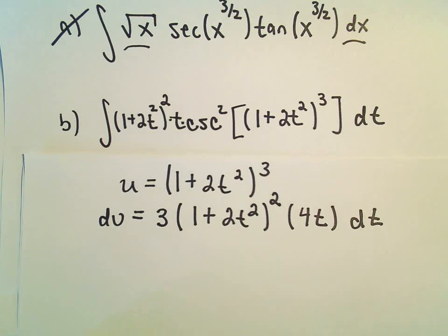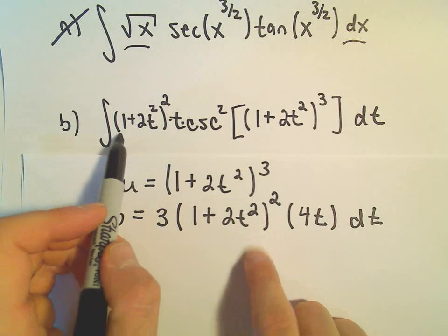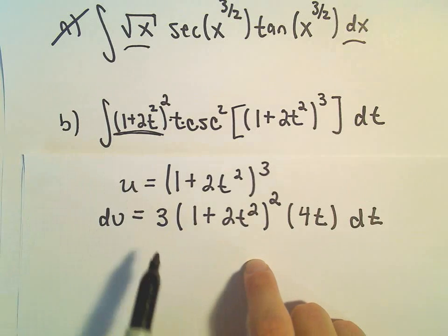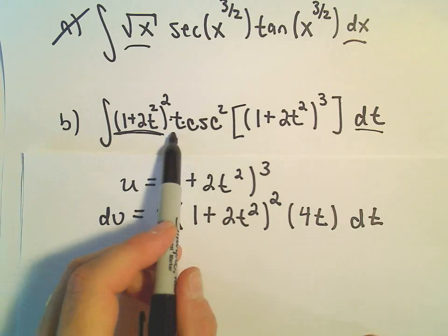So let's see here. We've got (1 + 2t²), that takes care of that part. Our dt is included. Our t is included.